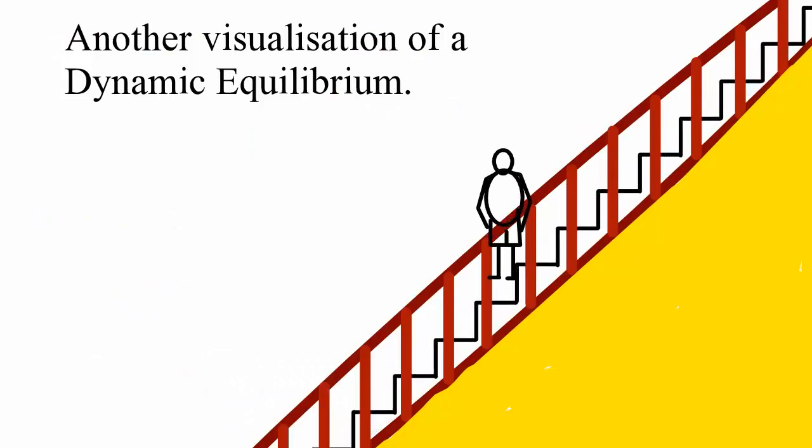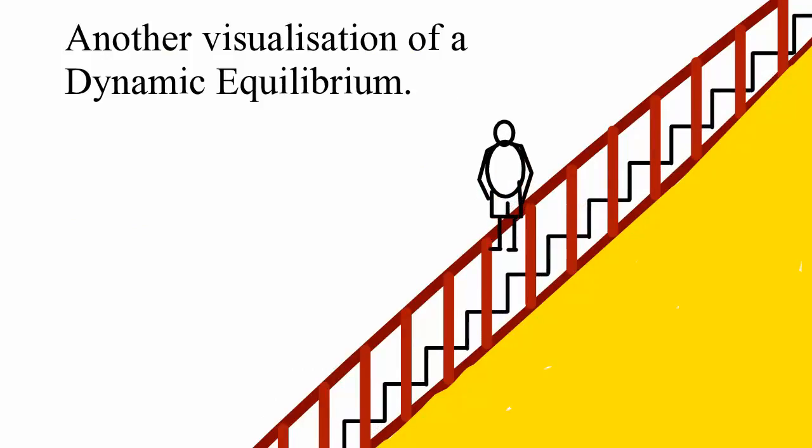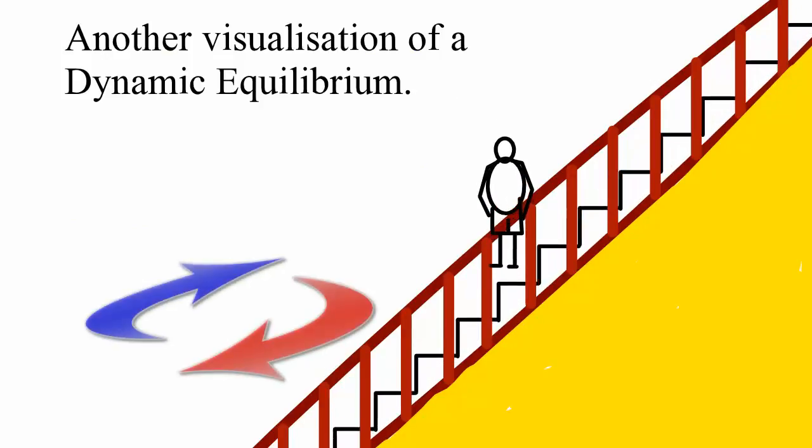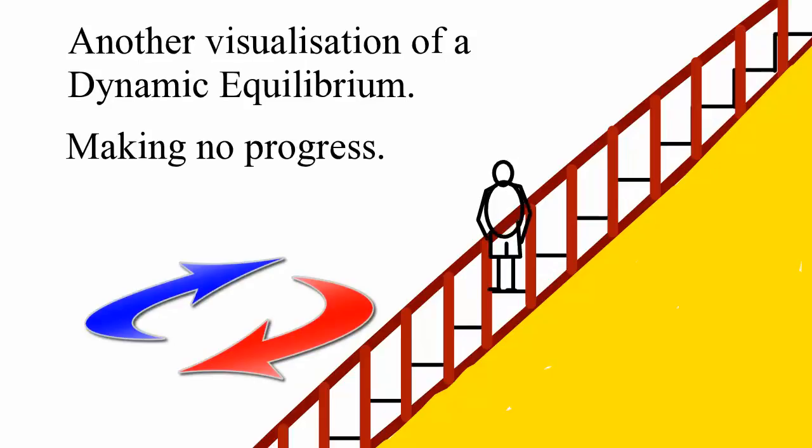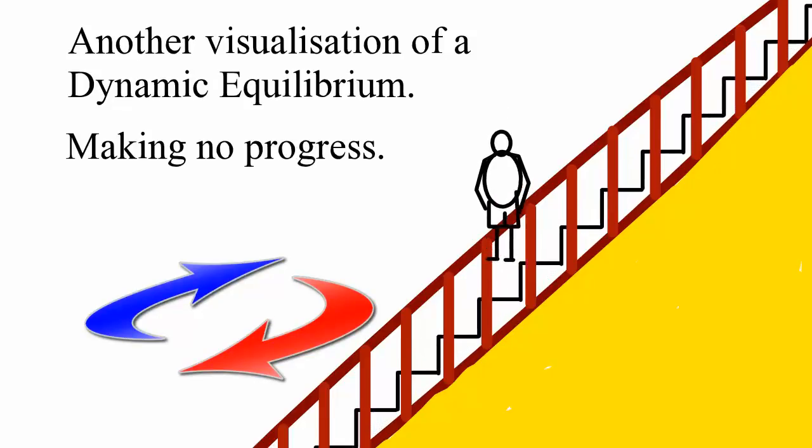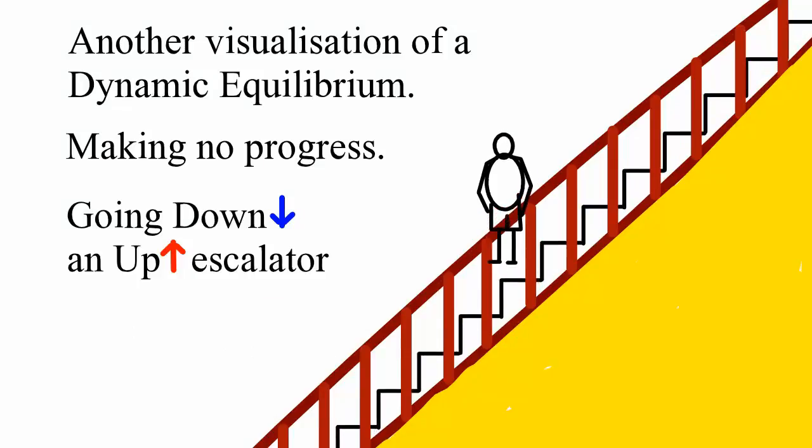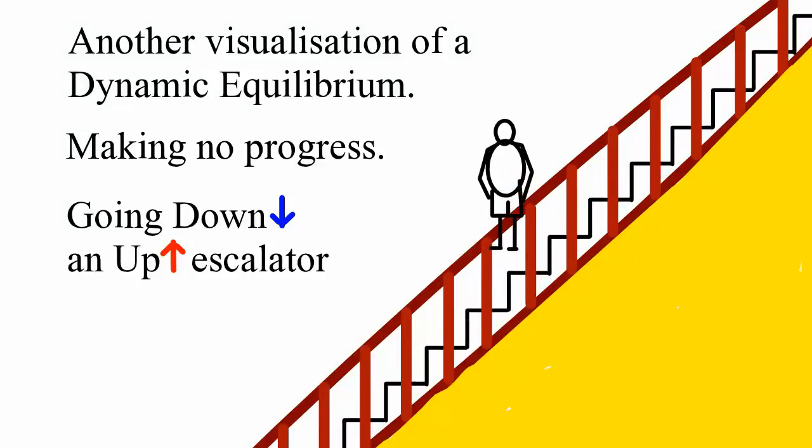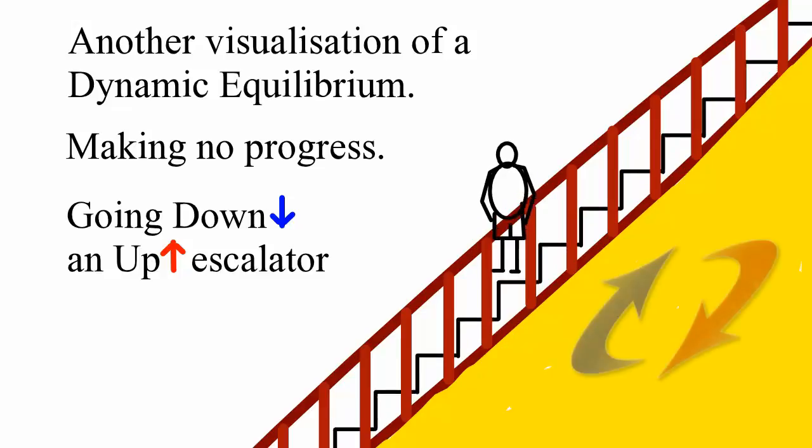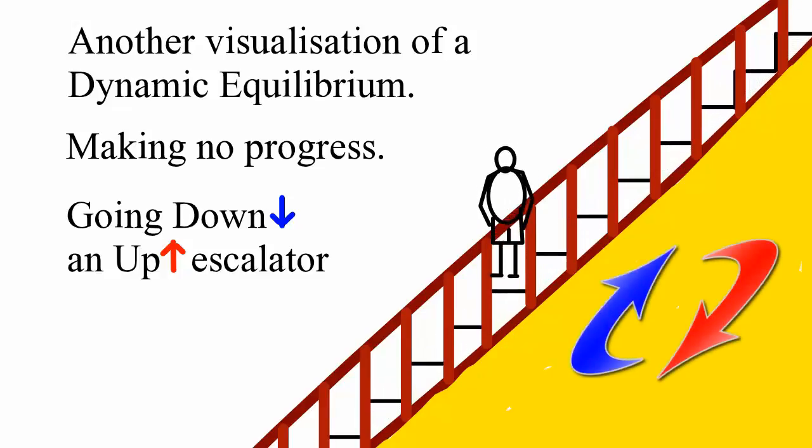Now here is another visualization using an escalator. As you can see, the person is traveling down an up escalator. No progress is being made because as quickly as he is going down, the escalator is going up. Here we have an escalator representing two opposing processes.